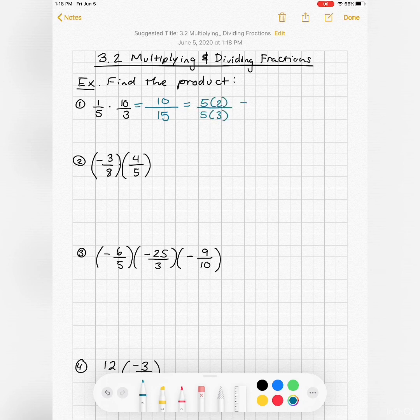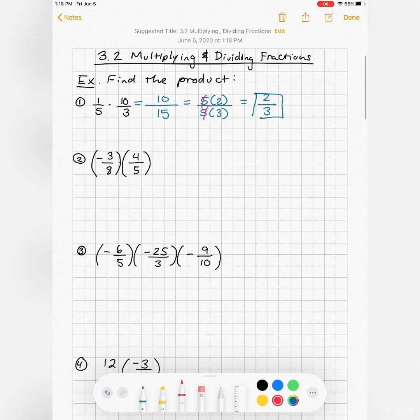So we did this in the last section, so the result or the product would be two-thirds. Multiply straight across: negative three times four, eight times five.